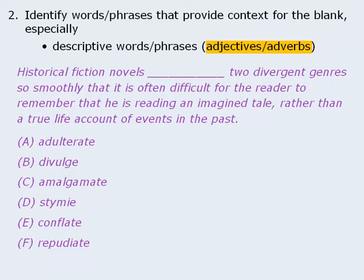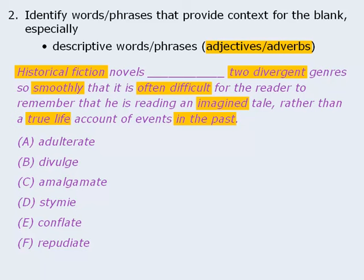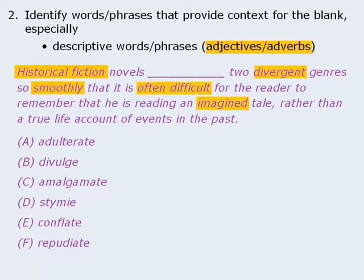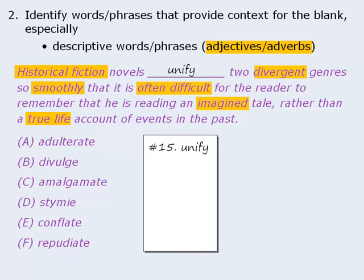Now it's your turn. You might want to pause the video and try this question before continuing. As we read this sentence, several descriptive words and phrases should pop out. The ones that provide context for the missing word tell us that historical fiction novels do something to the two divergent genres of history and fiction in such a smooth manner that it's difficult to distinguish between an imagined tale and a true life account. So let's predict 'unify.' Answer choice A, 'adulterate,' means to taint or make impure. This is possible since one genre is infiltrating the other, so let's keep it but use a squiggly line.